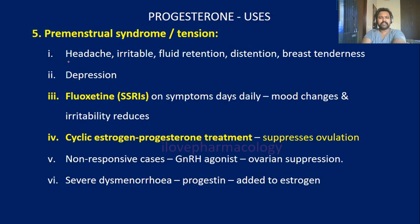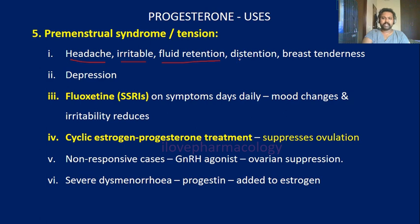The fifth use is that progesterone can be used to overcome premenstrual syndrome and premenstrual tension. Symptoms include headache, irritability, fluid retention causing edema, breast tenderness, and depression.